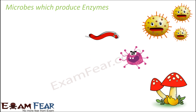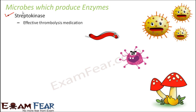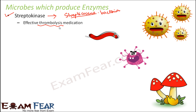Now let us look at some enzymes produced by microbes. Streptokinase is an enzyme produced by Streptococcus bacteria. The benefit of streptokinase is that it helps in effective thrombolysis medication. Thrombolysis is the dissolution of blood clots — when severe blood clot formation takes place, streptokinase is extremely useful to dissolve the clot.